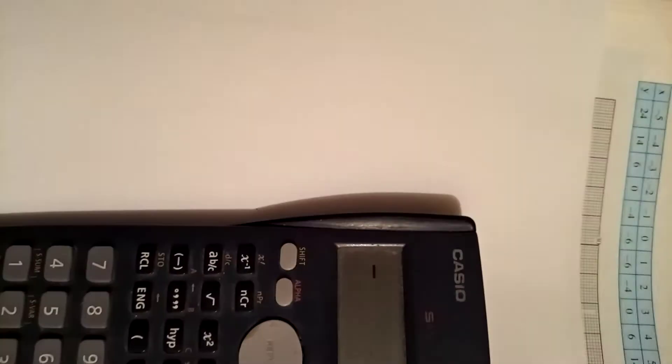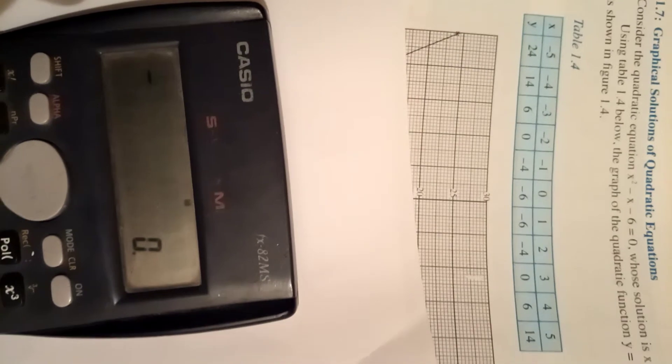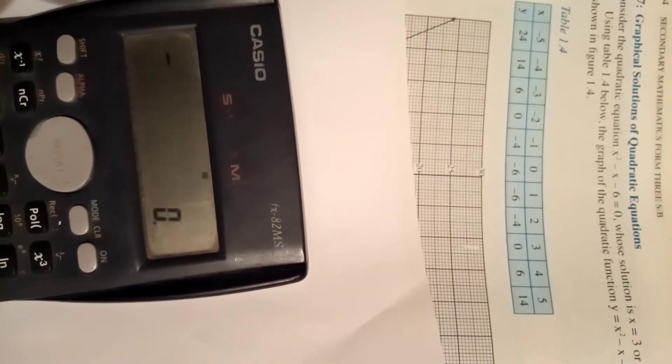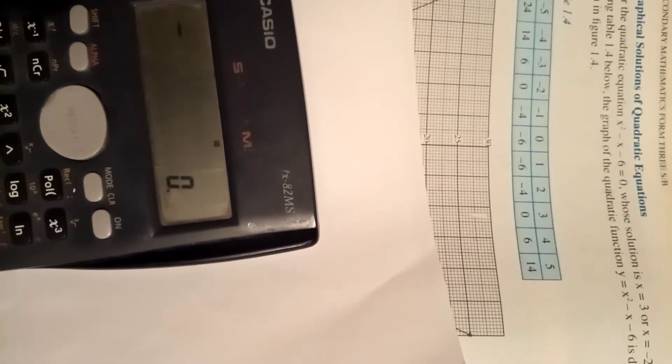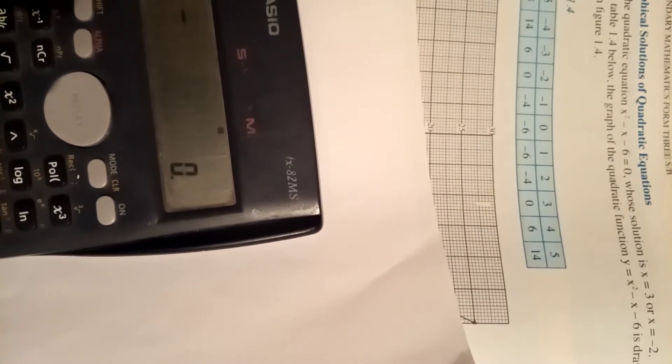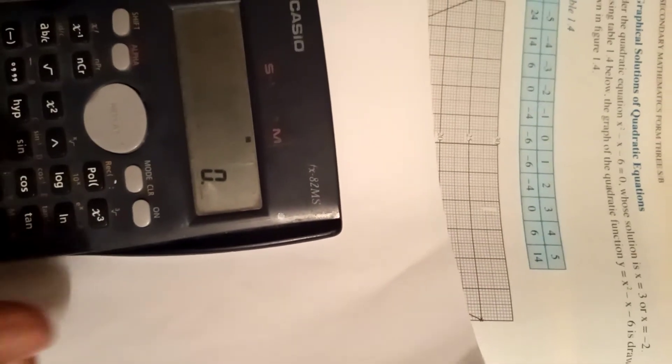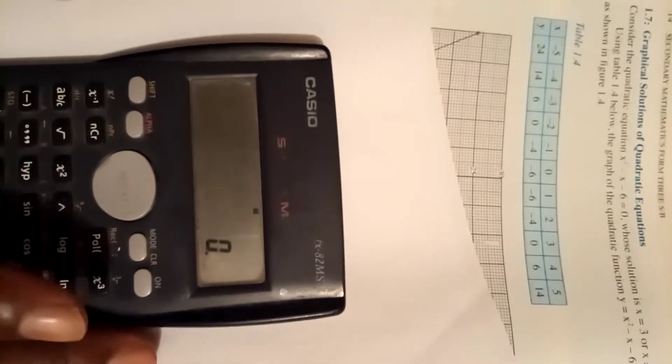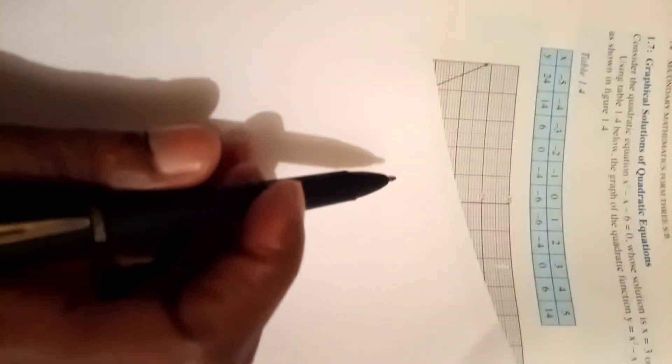Now the other thing that we were to look at was how we can complete a table of values in case you are given a function like the one being displayed here, x² - x - 6. Given such a function and you need to complete the table easily, we know we can do it manually which is not wrong, but we need to save time.